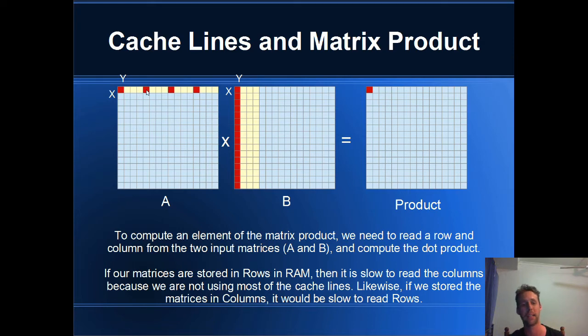Miss, hit, hit, hit. Miss, hit, hit, hit. So these diagrams are drawn as though cache lines are four bytes, but in reality, they're 64 bytes.